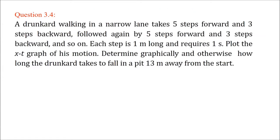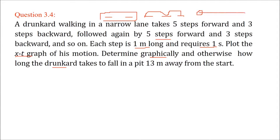A drunkard walking in a narrow lane takes 5 steps forward and 3 steps back. Each step is 1 meter long and requires 1 second. So he takes only 2 net steps per cycle forward and backward. We have to plot the x-t graph and determine how long the drunkard takes to fall into a pit 13 meters away. Every cycle he walks a net 2 meters, since 5 forward minus 3 back equals 2 meters.